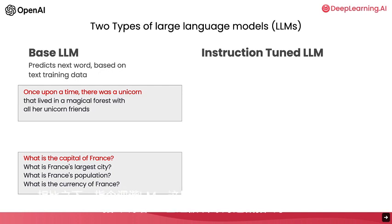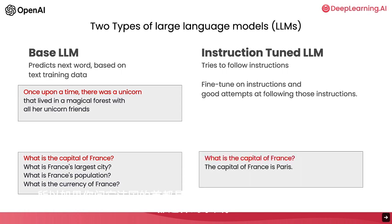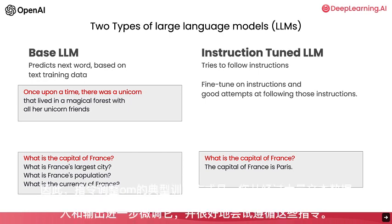In contrast, an instruction-tuned LLM — which is where a lot of the momentum of LLM research and practice has been going — has been trained to follow instructions. So if you were to ask it "what is the capital of France," it is much more likely to output something like "the capital of France is Paris." The way that instruction-tuned LLMs are typically trained is you start off with a base LLM trained on a huge amount of text data, and further fine-tune it with inputs and outputs that are instructions and good attempts to follow those instructions.